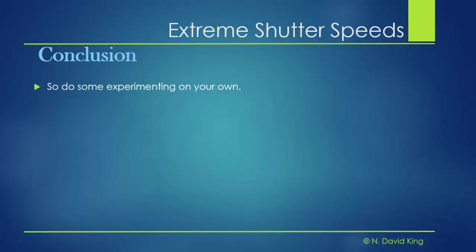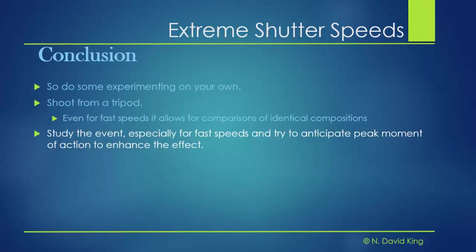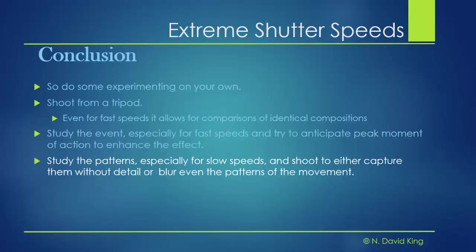You need to do some experimenting on your own to play with these. I highly recommend that even for fast shutter speed shots you shoot from a tripod — it will allow you to compare different images to pick the best ones. Study the event; if fast shutter speeds are perfect for it, try to anticipate the peak moment of action because things slow down as they peak, making the effect even stronger. For slow shutter speed shots, study the patterns of what's moving — whether water in the tides or grasses blowing in the wind — and shoot to either capture that pattern without detail, or blur it completely so it's impossible to tell what you're looking at. You've created a whole new world.